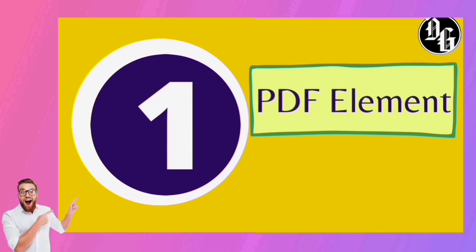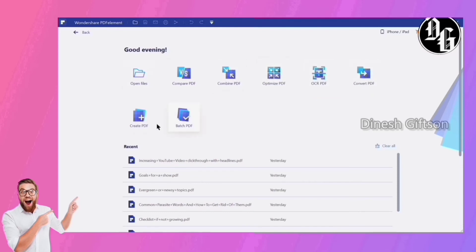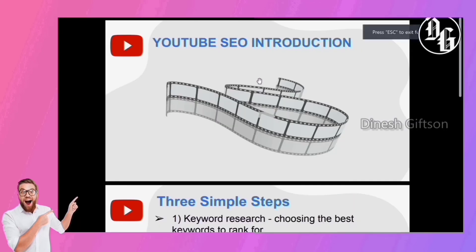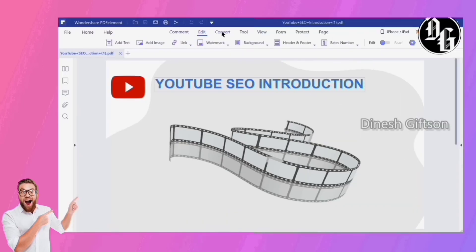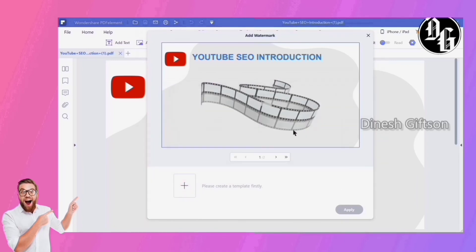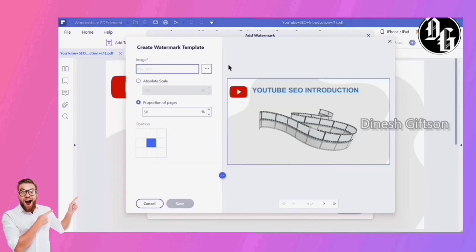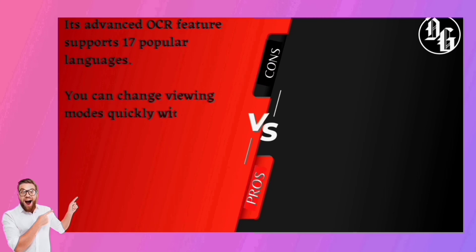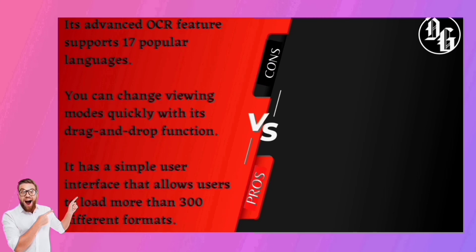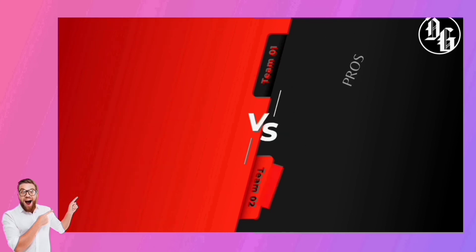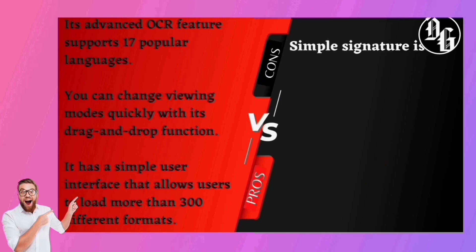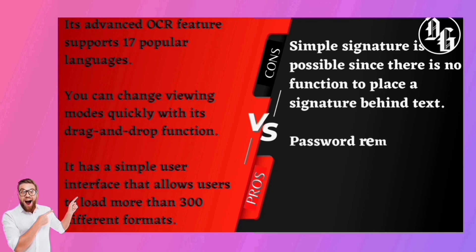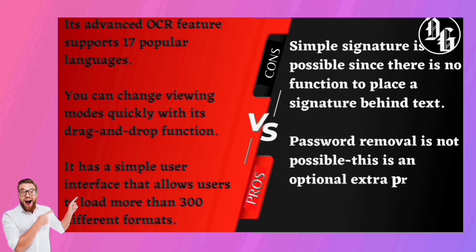Coming in at number one, we have PDF Element. PDF Element is loaded with numerous feature tools that will help all users view PDFs, whether you are a personal or business user. You can enjoy reading PDF files on Kindle, iBooks, desktops, and more. PDF Element has great compatibility with all versions of Windows from XP to Windows 10, and is also available on Linux and Mac. Comparing prices, the cost of PDF Element is much less than other PDF readers. Its advanced OCR feature supports 17 popular languages, and it has a simple user interface that allows users to load more than 300 different formats. You can also view scanned images easily with the embedded OCR feature. The cons: simple signature is not possible since there is no function to place a signature behind text, and password removal is not possible — it's an optional extra program offered for $20.